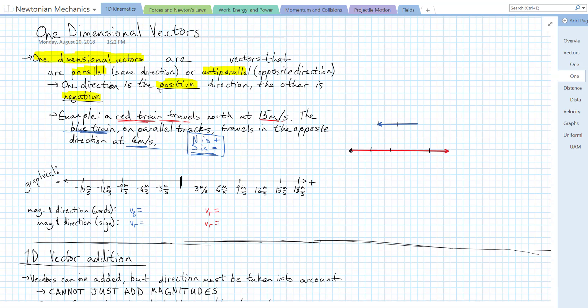So the red train travels north at 15 meters per second, so the velocity of the red train is 15 meters per second to the north. Since we said north is positive, we would just write that as plus 15 meters per second. We don't have to write north if we use positive or negative.